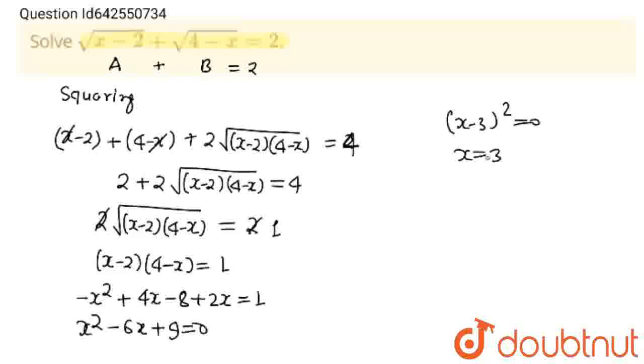So solution will be x is equal to 3. And see, we have changed original equation into its duplicate form. So we will have to put x is equal to 3 in this and we will check whether x is equal to 3 is acceptable or not. So 3 minus 2 which is 1 and 1 is positive. 1 is acceptable for this square root and 4 minus 3 which is also 1. So 1 is acceptable for this square root. 1 plus 1 is equal to 2. So this is our final solution. Thank you, students.